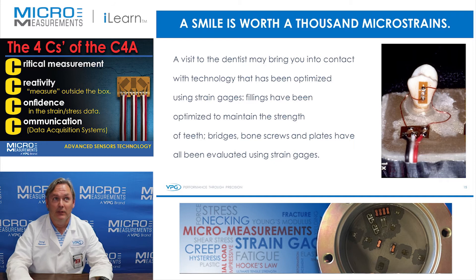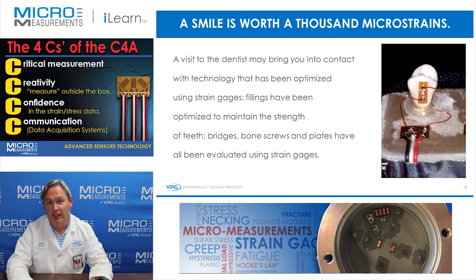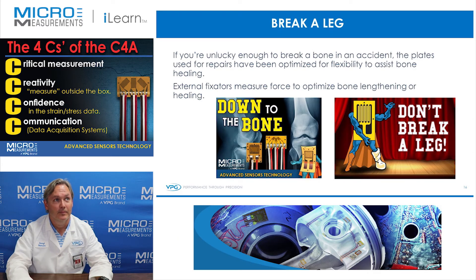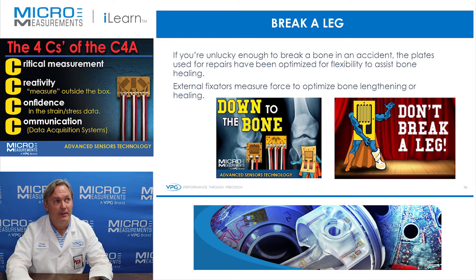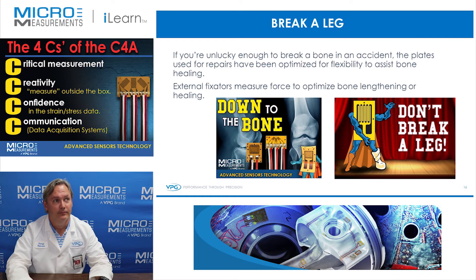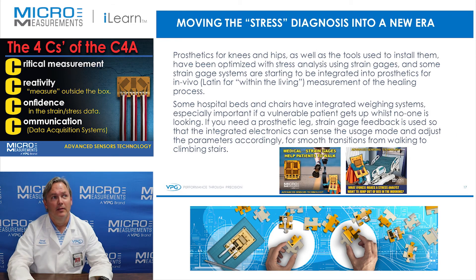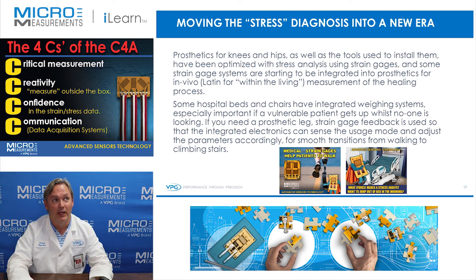A visit to the dentist may bring you in contact with technology that's been optimized using strain gauges. Fillings have been optimized to maintain the strength of the teeth, and bridges, bone screws, and plates have all been evaluated using strain gauges. If you're unlucky enough to break a bone in an accident, the plates used for repairs have been optimized for flexibility to assist bone healing. External fixators measure force to optimize bone lengthening or healing. Prosthetics for knees and hips, as well as the tools used to install them, have been optimized with stress analysis using strain gauges. Some strain gauge systems are starting to become integrated in prosthetics for in vivo measurement of the healing process.